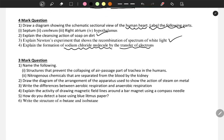Next question comes, three marks questions. Name the following: structures that prevent the collapsing of air passage part of trachea in the humans. Next, nitrogenous chemicals that are separated from the blood by the kidney. Next, draw the diagram and arrangement of the apparatus used to show the action of steam on a metal.